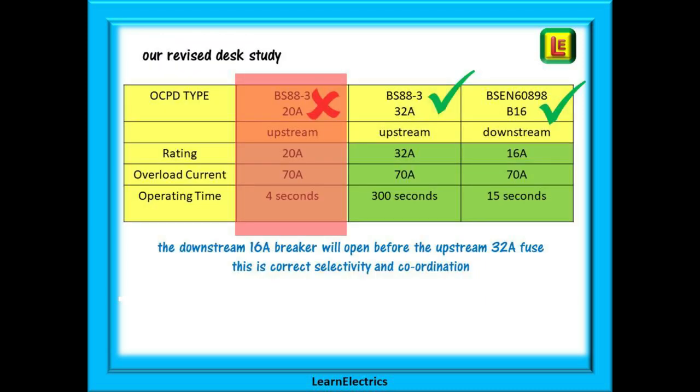Putting this answer into the table we can see that the 32 amp breaker takes 300 seconds to blow but the MCB takes only 16 seconds to operate. Therefore the MCB will operate first, the fault current will disappear from the circuit and the 32 amp fuse will not blow. This means that the cellar sockets will be isolated but the cellar lights will stay on. This is correct selectivity and coordination.